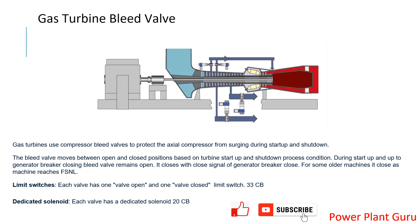Here is a schematic of a gas turbine. There are four valves — valves one, two, three, and four — basically provided to allow the compressor air to exhaust into the gas turbine exhaust.